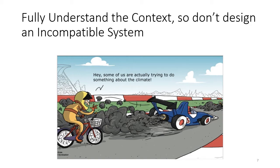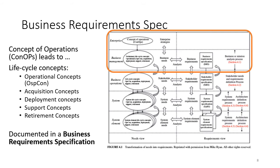It's really critical to understand the full context and all of the constraints in which the system will be deployed, operated, maintained, and then retired. You'd hate to end up building a system that really didn't meet the required context. Figure 4.1 summarizes this topic of the business requirements specification. It shows how the business or mission analysis develops the concept of operations — a description of how the world works and how the process we're going to enhance operates — leading to preliminary life cycle concepts: OPSCON, acquisition, deployment, support, and retirement, all going into the BRS.